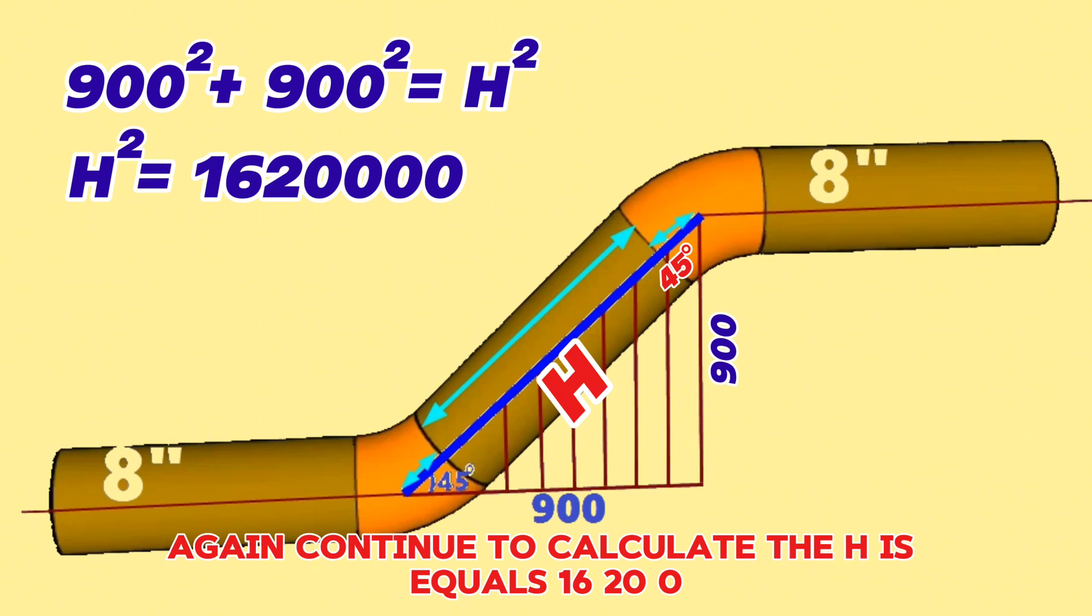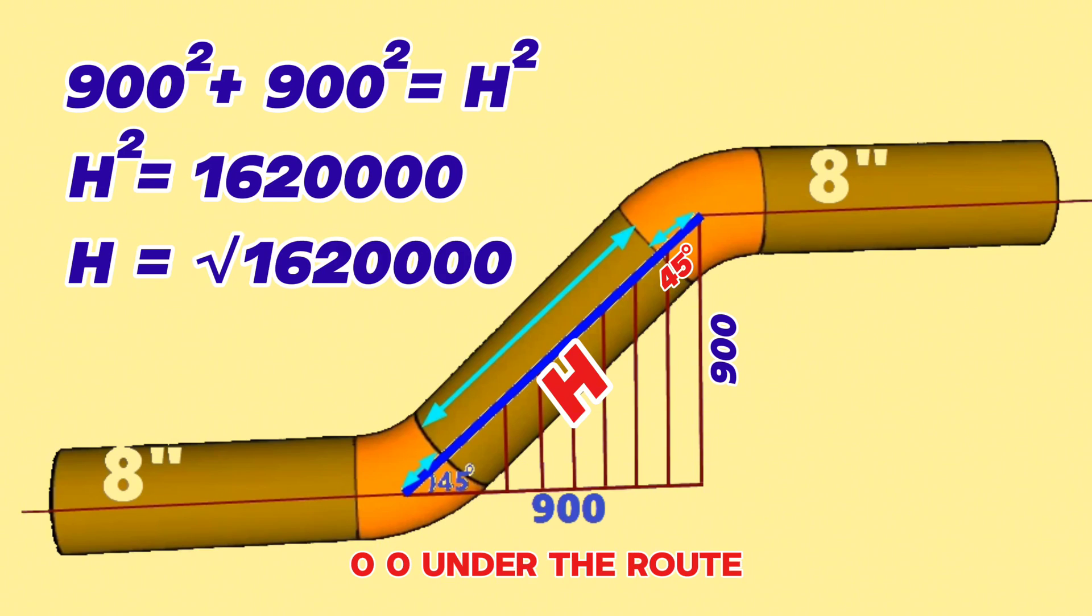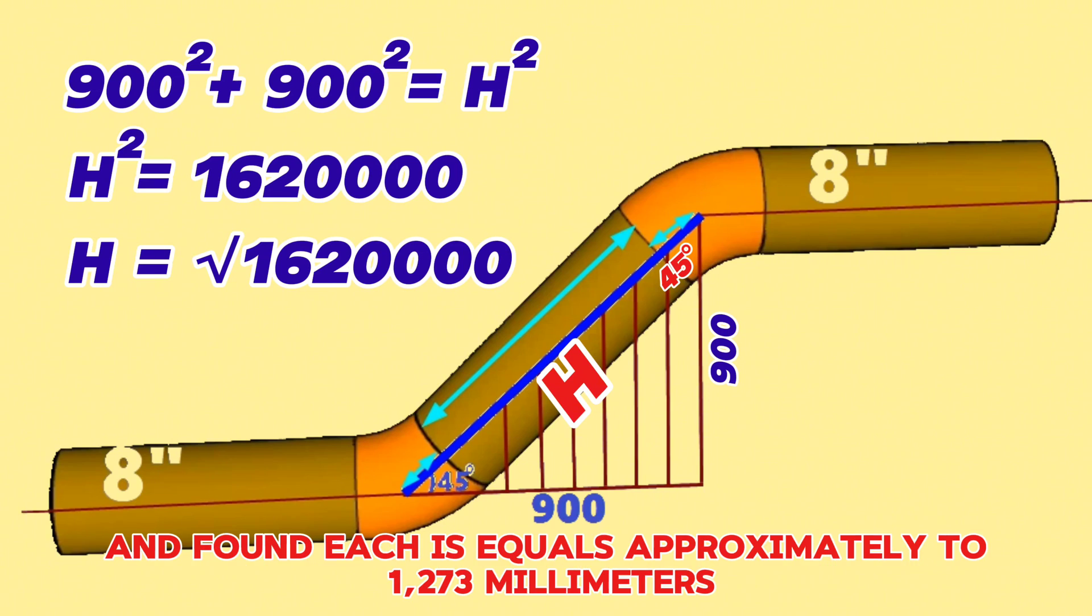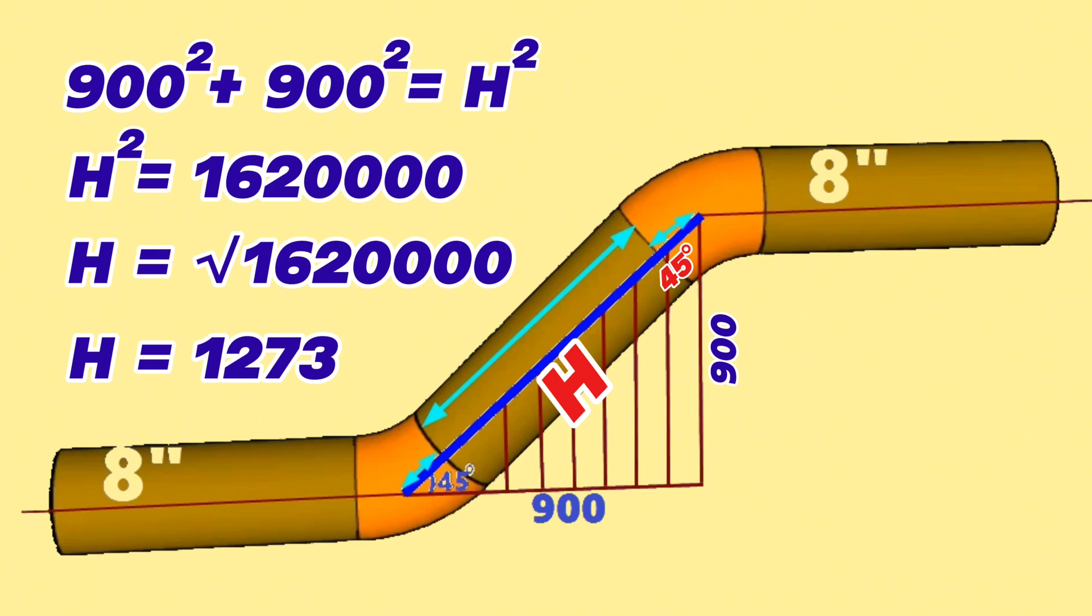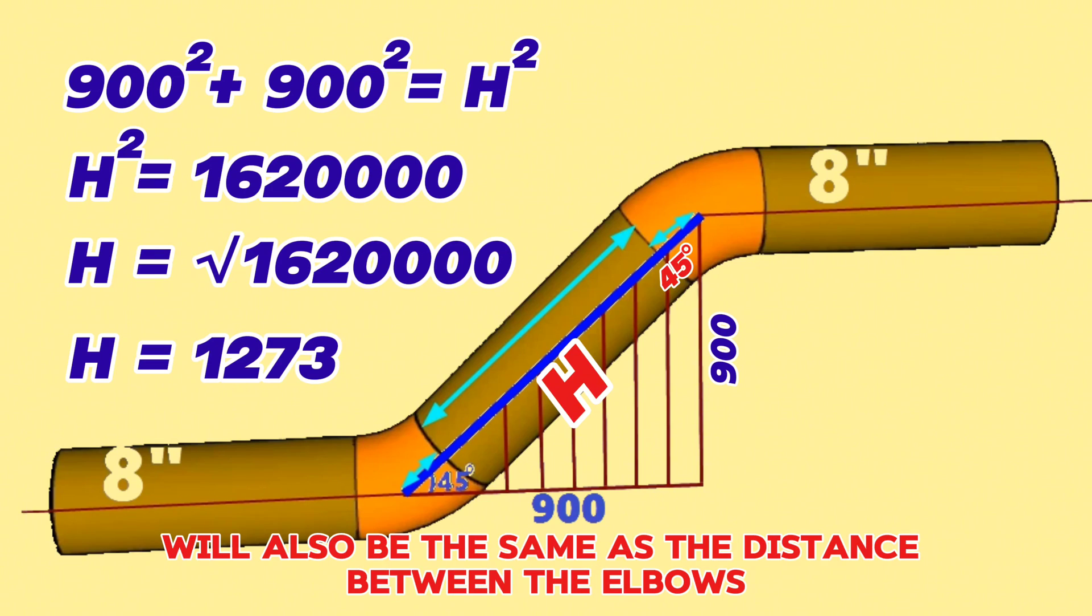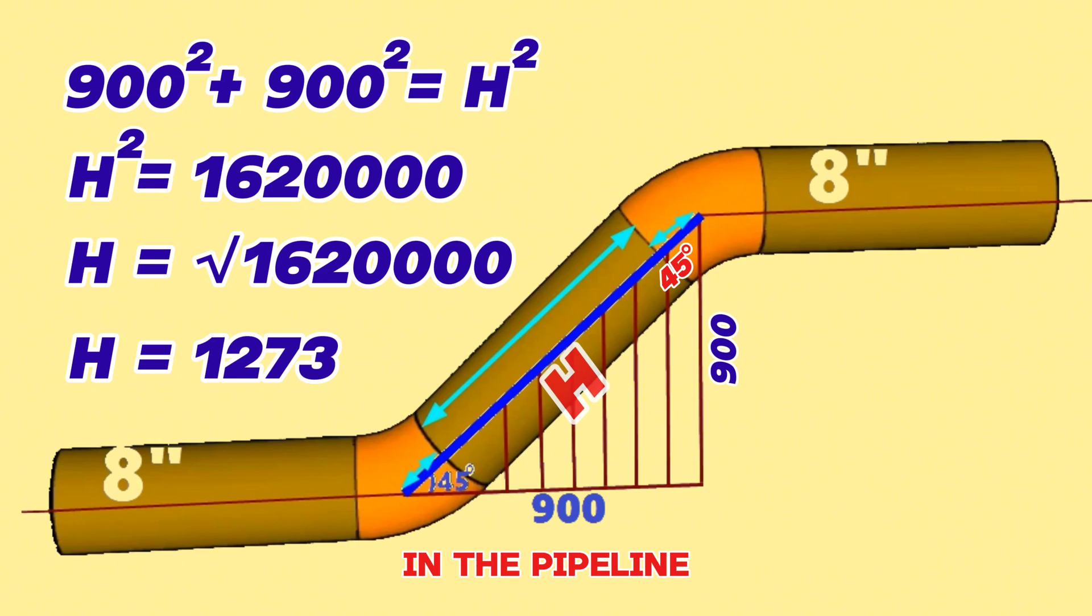Continuing to calculate, H equals the square root of 16,200,000. Using a scientific calculator, we find H equals approximately 1,273 millimeters. This measurement will also be the same as the distance between the elbows in the pipeline.